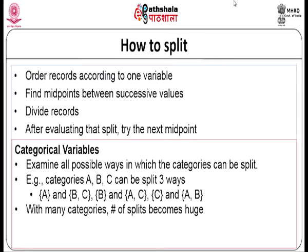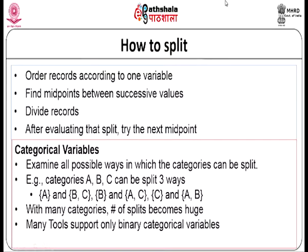For categorical variables, examine all possible ways in which categories can be split. Categories A, B, and C can be split in three ways: {A,B} vs {C}, {B} vs {A,C}, and {C} vs {A,B}. With many categories the number of splits becomes very large, which is why many tools support only binary categorical variables, limiting the number of possible splits.